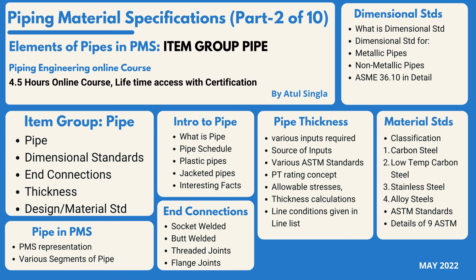Piping material specification is one of the most important deliverables from the piping discipline. This is the second part of the course. In the first part we discussed what PMS is, the various items in PMS in detail, and the various inputs required, especially the fluid list. Now let us see what we are going to cover in this part. The main agenda is item group: Pipe. We will divide this section into five parts — pipe, dimensional standard, end connection, thickness, and design and material standards.